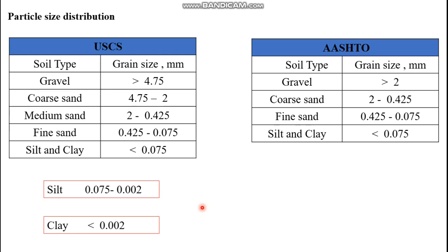Particle size distribution is used to identify what type of soil is present — whether it is dominantly gravel, sand, silt, or clay. To know the proportion of each soil type, you conduct a mechanical particle size distribution process. For classifying soils, the two most commonly used classification systems are the Unified Soil Classification System (USCS) and the AASHTO (American Association of State Highway and Transportation Officials) classification system.